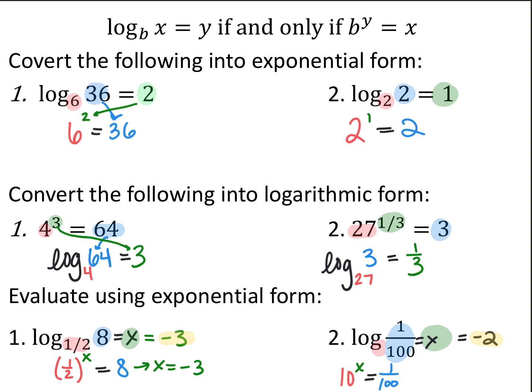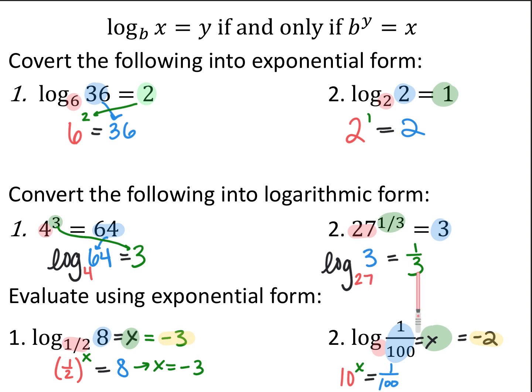For the next one, I have 27 to the 1/3 is equal to 3, and it wants me to convert it into logarithmic form. Base stays the same, so the base of my logarithm is going to be 27. Input and output switch — my exponent becomes my answer, my output becomes the inside of the logarithm. What power do I have to raise 27 to in order to get 3? The 1/3 power.